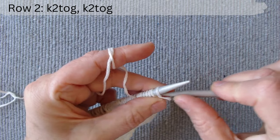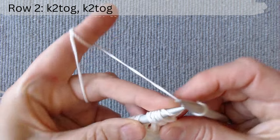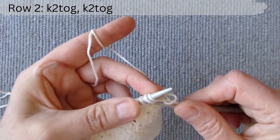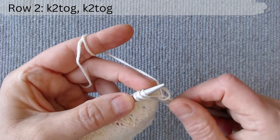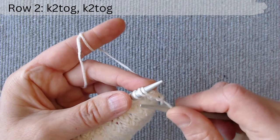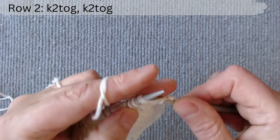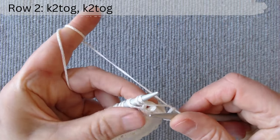Row two, right side. The repeat pattern is: knit the first stitch and yarn over loop together through the front loop, knit the next two stitches together through the back loop.